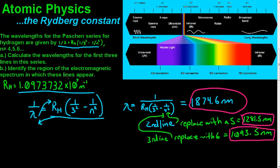Now it says identify the region of the electromagnetic spectrum in which these lines appear. As we know, visible light goes from roughly 375 nanometers to about 725 nanometers. So if it's above that, which it is—we're ranging from 1,000 to 1,800 nanometers here—it's going to fall in the infrared region.